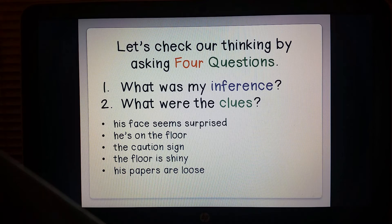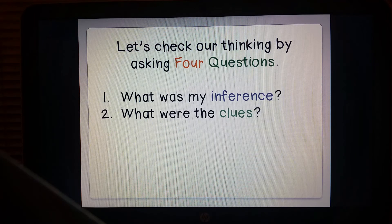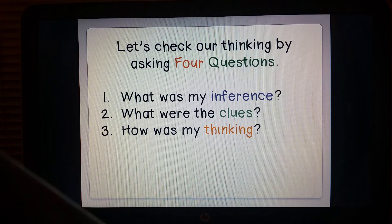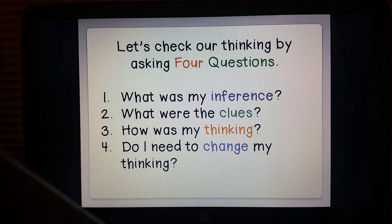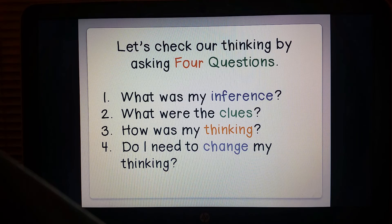These clues support the idea that perhaps he slipped and fell. The third question is to check your thinking: do the clues support your inference, and does it make sense? Finally, do I need to change my thinking? An example of why we would need to change our thinking: perhaps in this picture we first thought he tripped, but as we go back and look at the clues, like the caution sign and the shiny floor, we can further deduce that he probably slipped because of a wet floor. That doesn't mean our first inference was wrong — it just means we've collected more information and now we are changing our thinking.